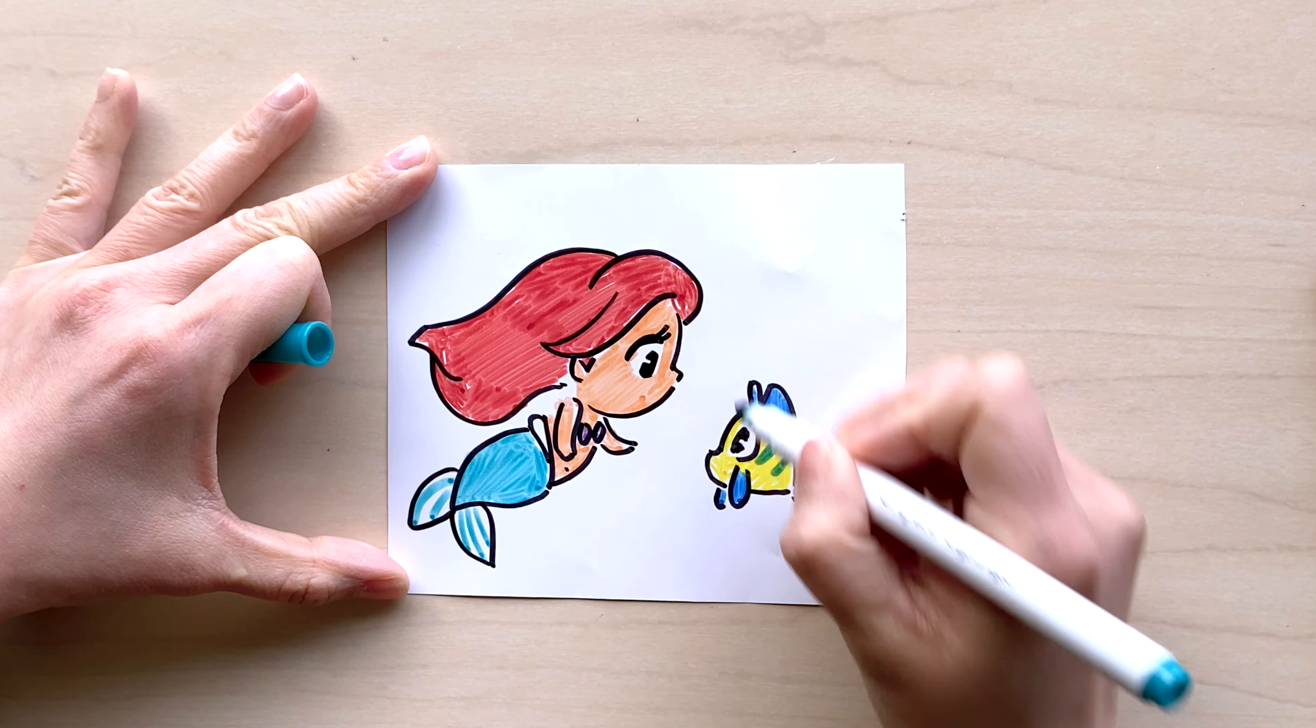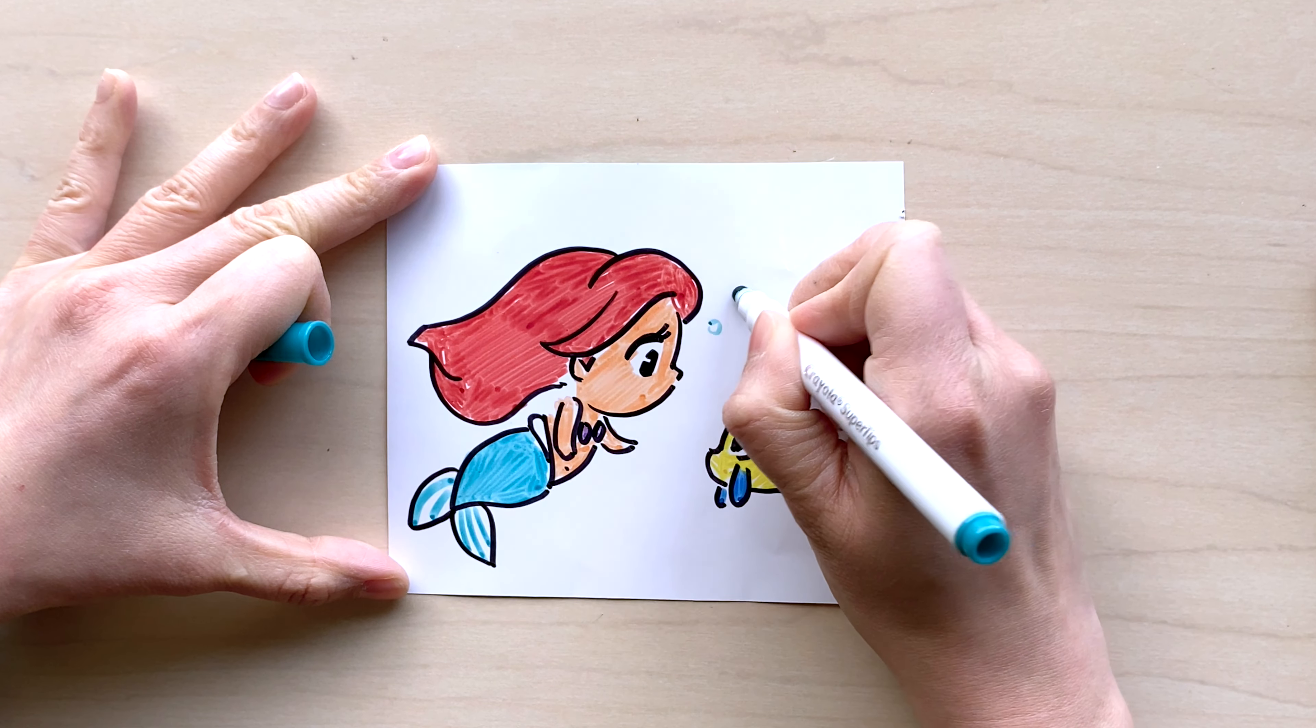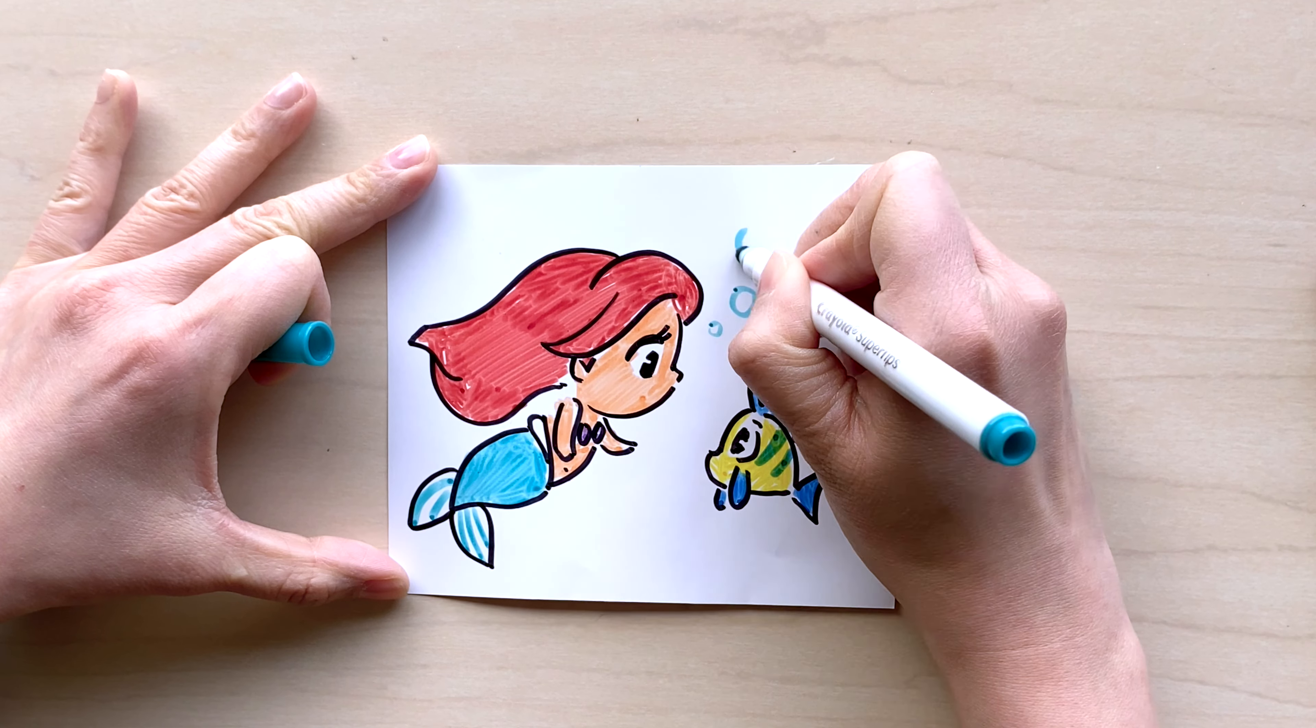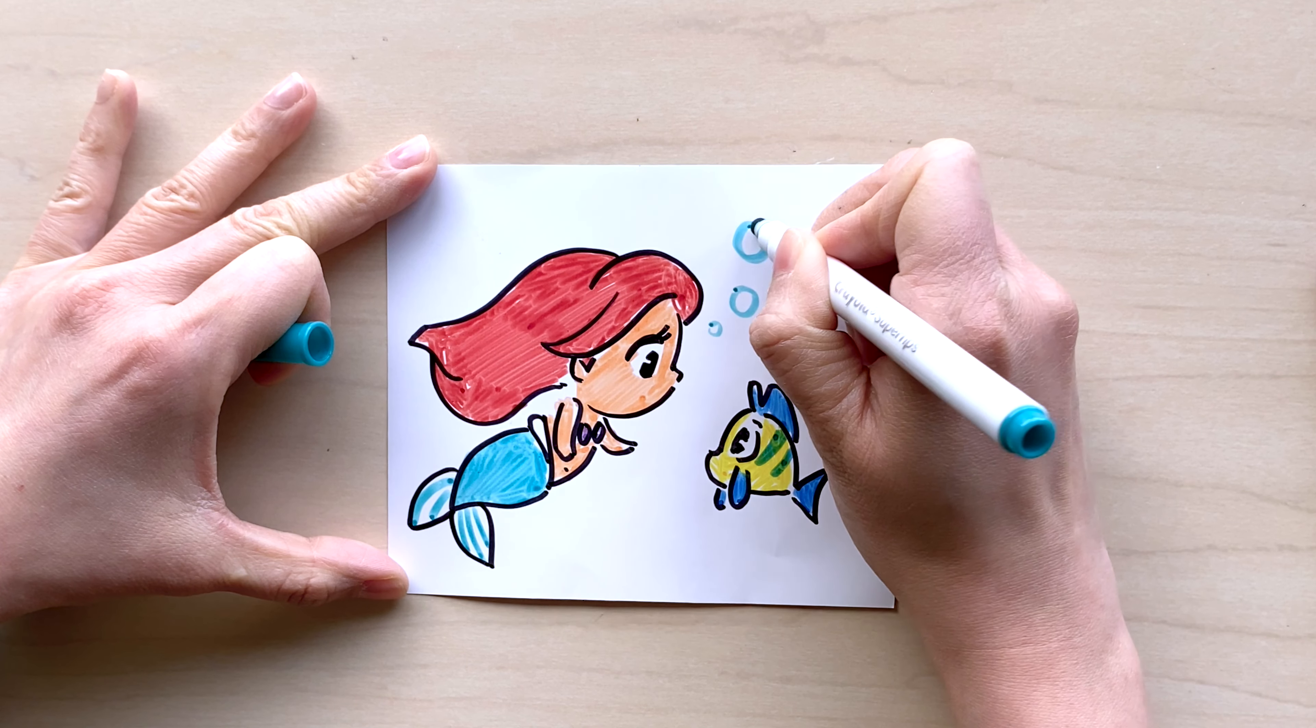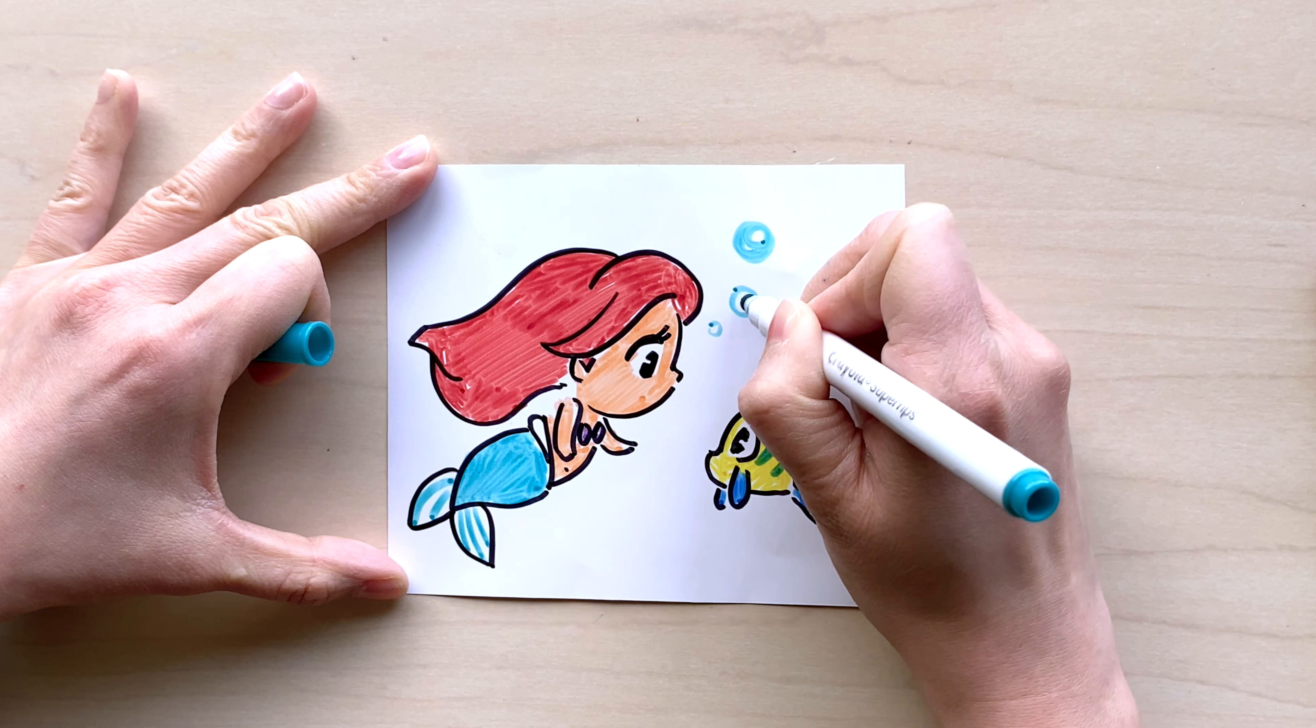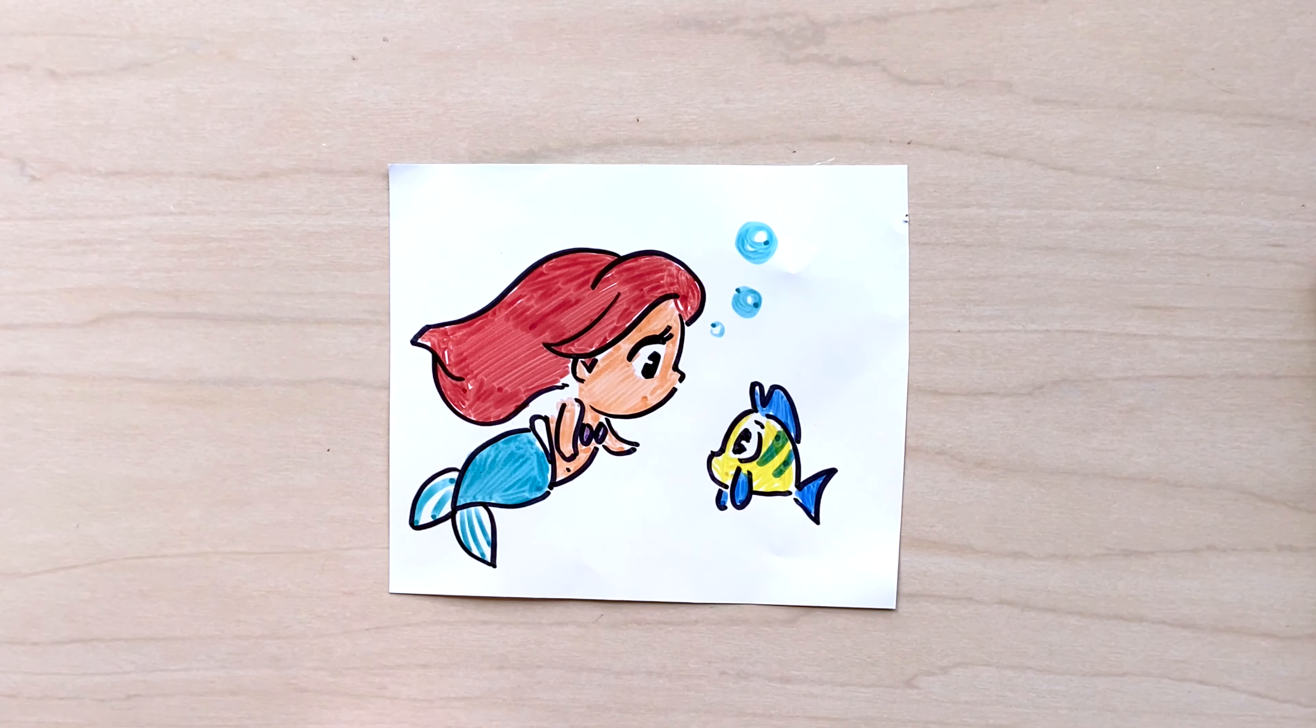Using the same color marker, I think I'll draw in some air bubbles because I think that will make the drawing more realistic. As they're talking to each other, there's air bubbles that are coming out, so I'm using the same color as what I'm using for Ariel's tail. You can also use different color bubbles as well—maybe rainbow bubbles.